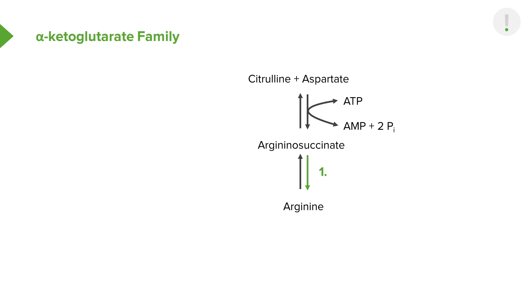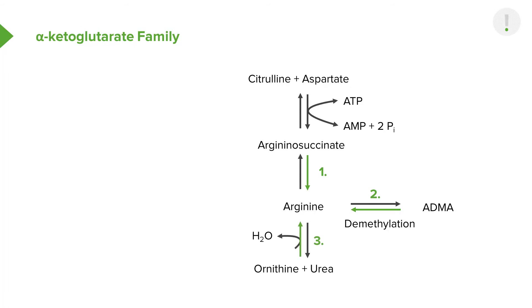Argininosuccinate, the product of the first reaction, is converted into arginine in the next step — completing pathway number one. ADMA, after a protein has been broken down, can be demethylated to make arginine. We also see that starting with ornithine and urea and going upward with the loss of water, we can make arginine. Normally, this reaction occurs in the downward direction in the urea cycle, so to make arginine we have to reverse it — which is not a very common route.